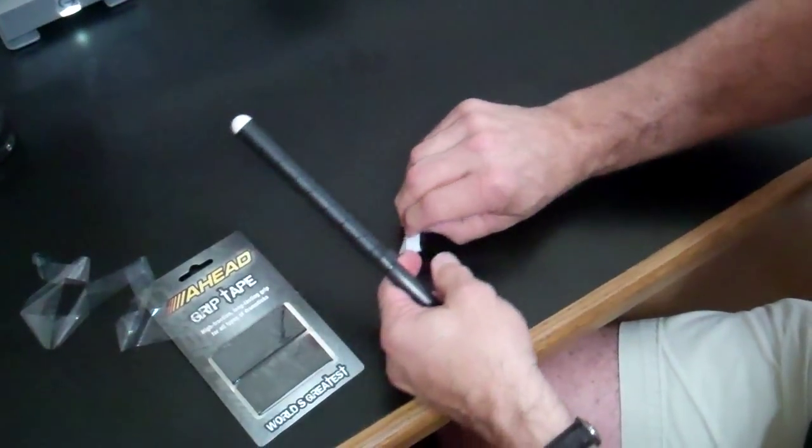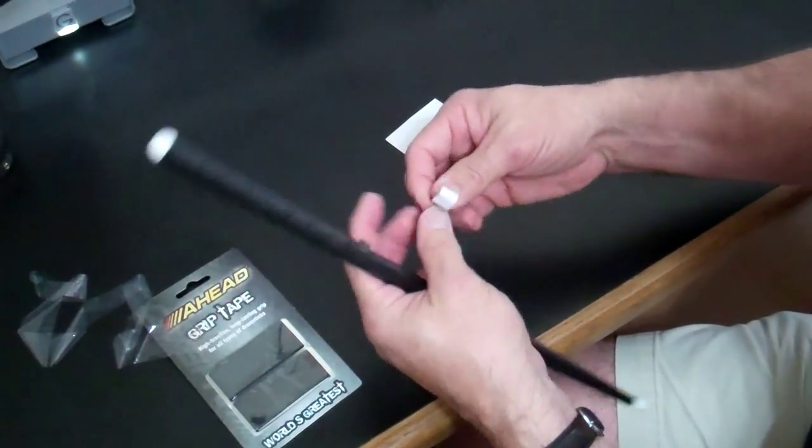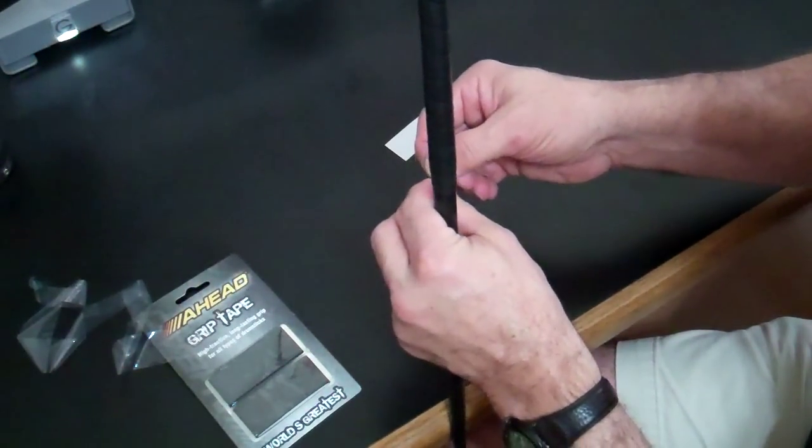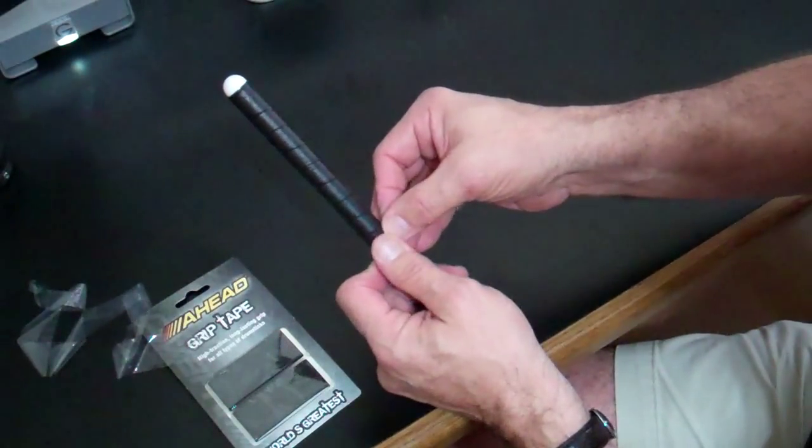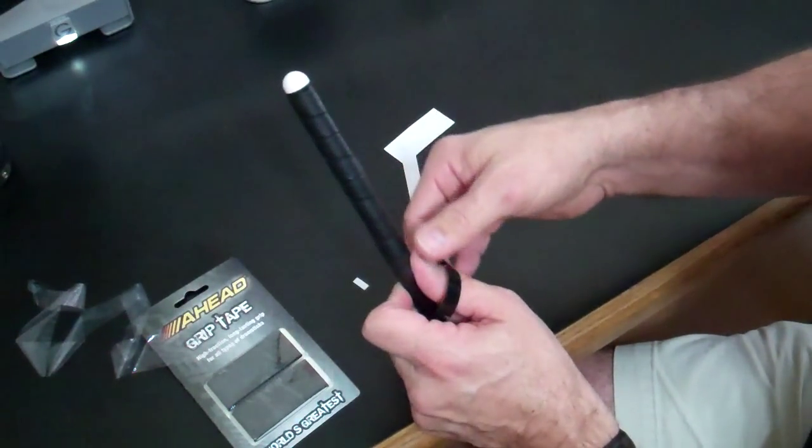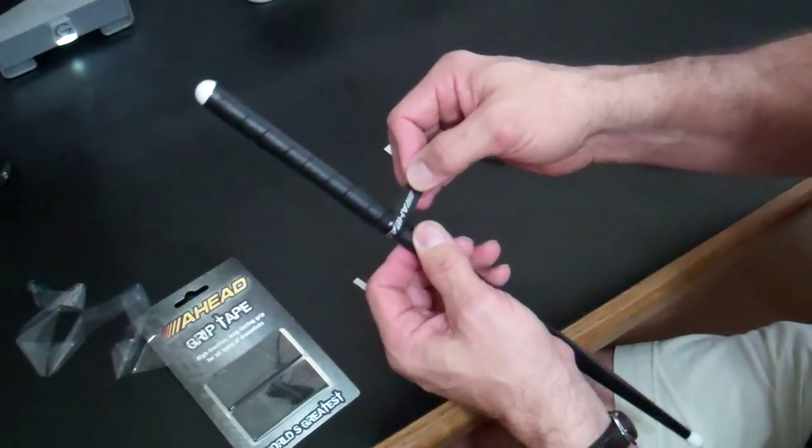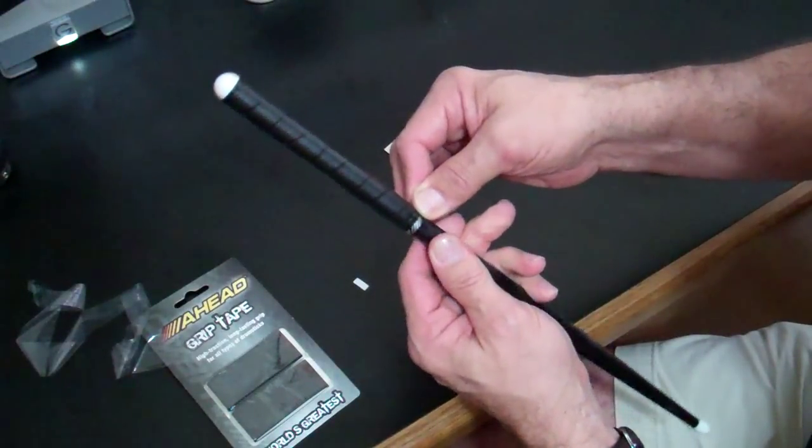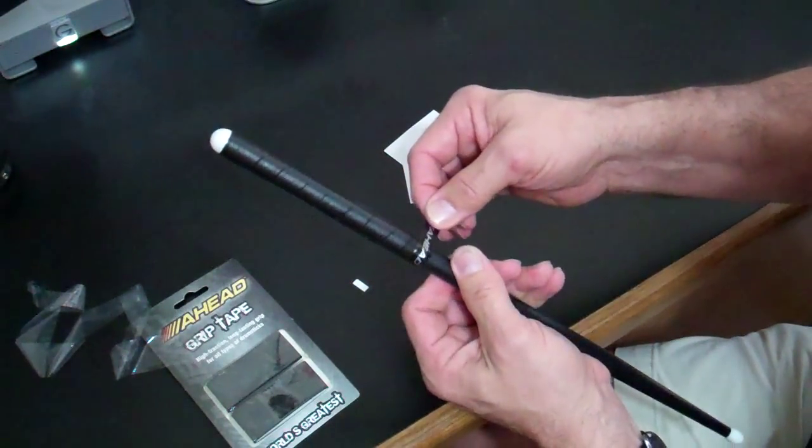And then we give you some finishing tape here. Pull the backs off those. You start it right here, and you really don't want to touch it too much, so you want to pull the sticker off at the very end so you don't get your finger oils on it. And just wrap it all the way around and finish it off.